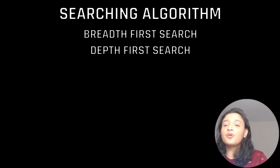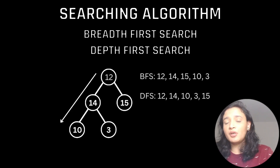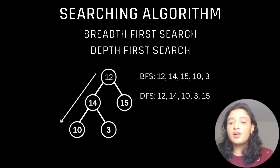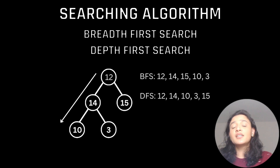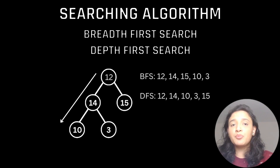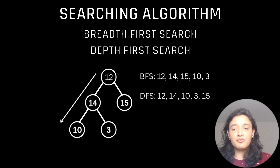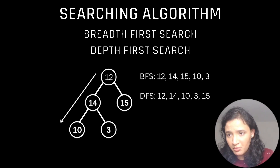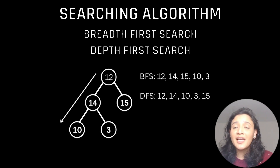The second important searching algorithms are breadth-first search (BFS) and depth-first search (DFS). In BFS on a binary tree, traversal visits nodes level by level: 12, then 14 and 15, then 10 and 3. In DFS, traversal goes deep in one direction — from 12 to 14, then to 10; with no more data, it backtracks to 3, then 15. BFS uses a queue data structure, while DFS uses a stack. Make sure you can apply these on both binary trees and matrices.